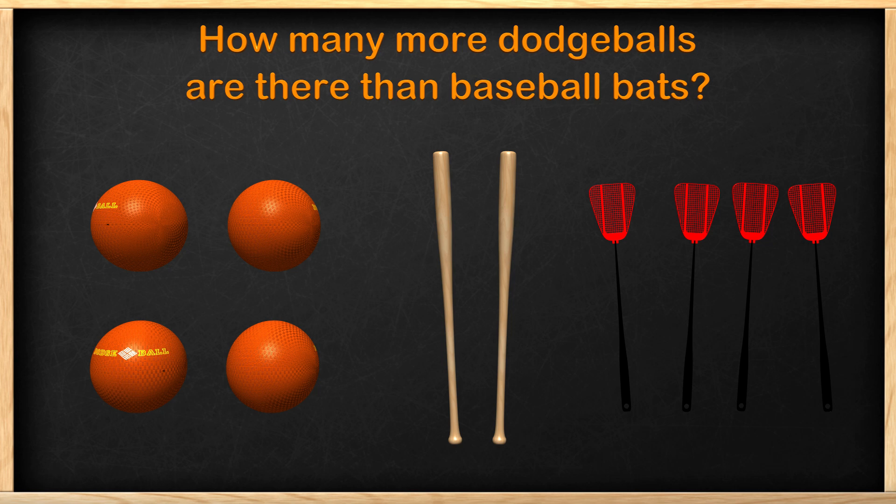Which group of objects do we not need to worry about in this problem? The fly swatters. Even though fly swatters are handy when pesky robot wasps come, they are not useful in this problem and are just a distraction. Let's move them to the side.